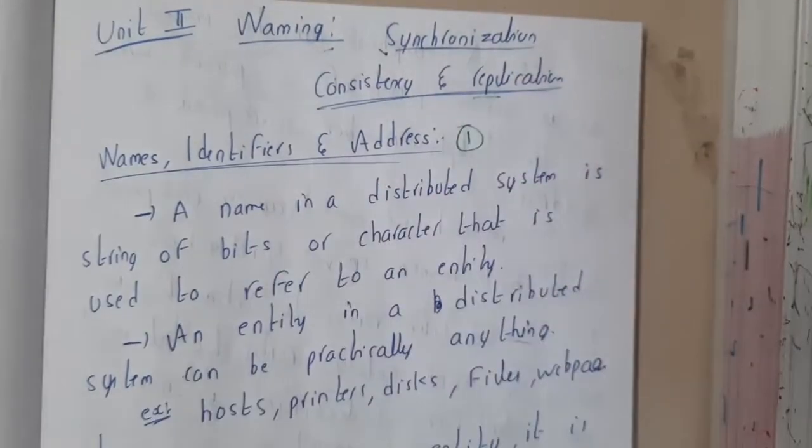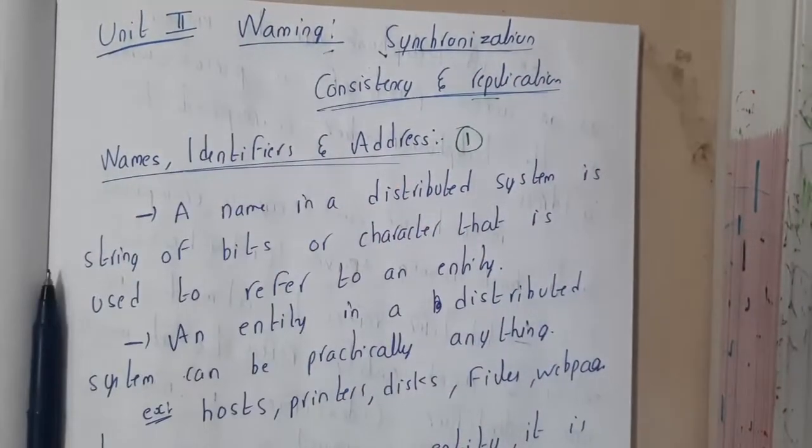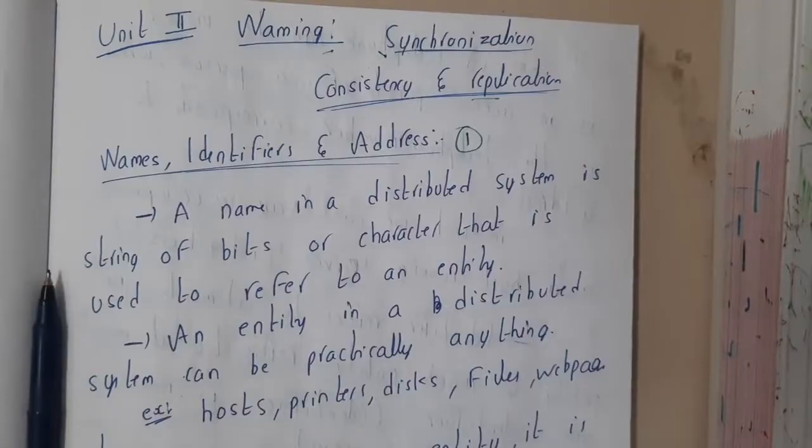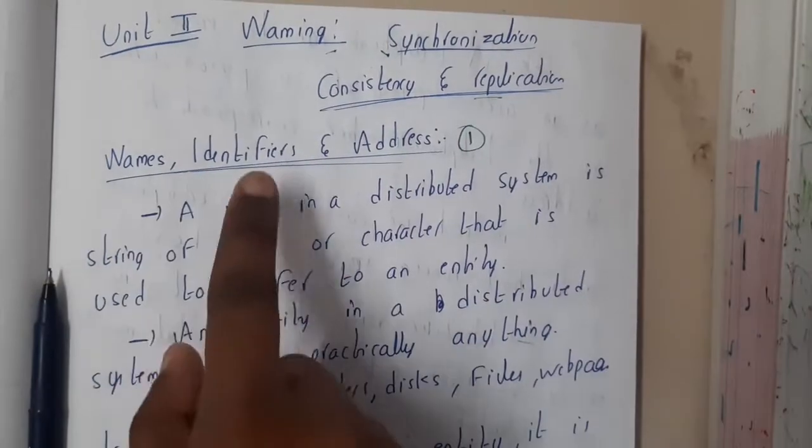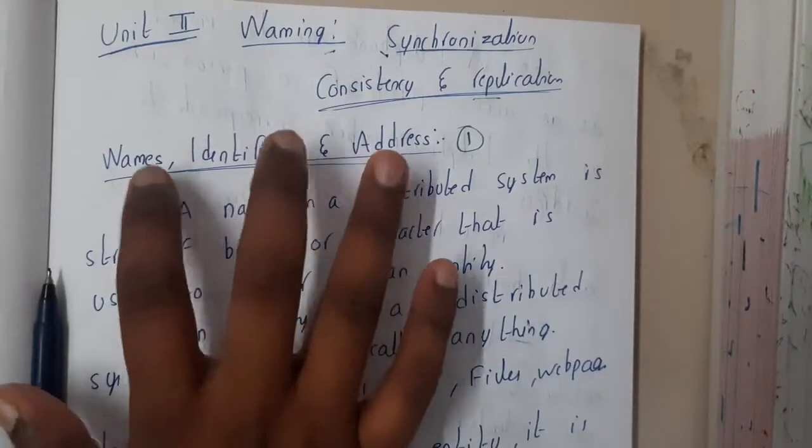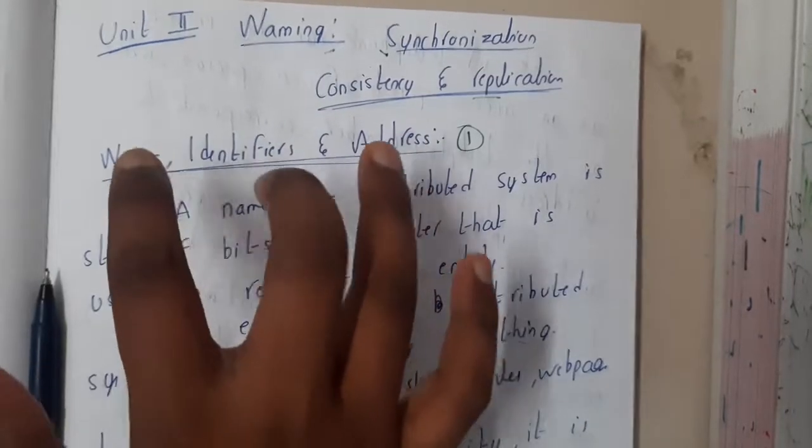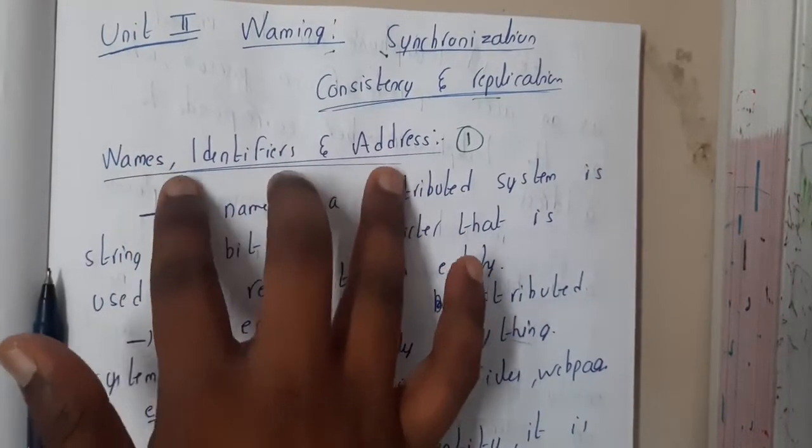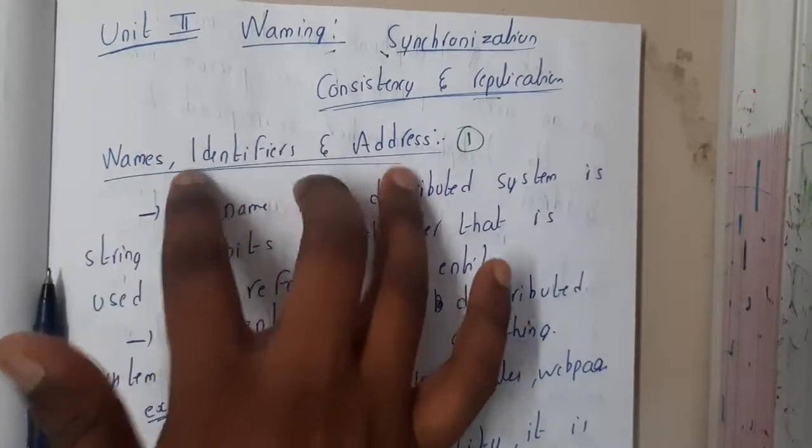Initially, we will be starting with naming. And in this lecture, we will be discussing names, identifiers, and addresses. These are the three important terminologies which you should have a hundred percent clarity on, because anytime you can expect a question on these definitions for at least two marks.